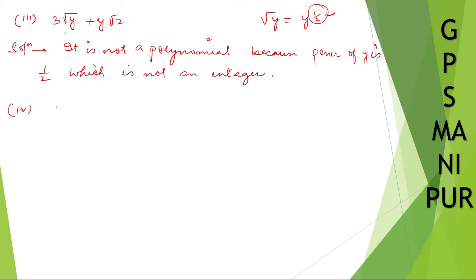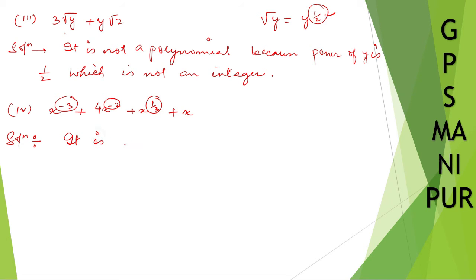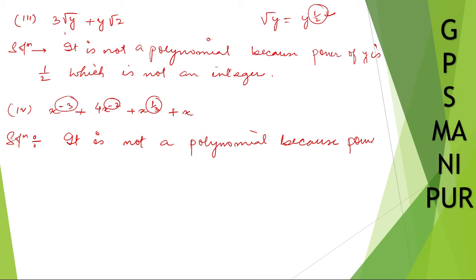Roman number four: x to the power minus 3 plus 4x to the power minus 2 plus x to the power 1/3 plus x. Look very carefully — these powers are negative and one is a fraction. So this is not a polynomial because the power of x is negative and also a fraction.